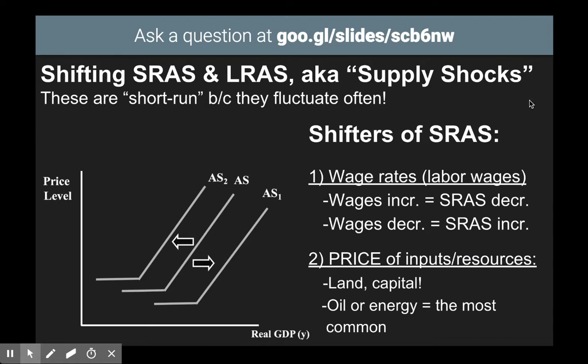So, shifting aggregate supply. We have two different curves: we have SERAS, the short run aggregate supply, and we have LURAS, the long run aggregate supply. We're going to look at SERAS first. The shifters for short run aggregate supply are things that can fluctuate often or change fairly frequently.